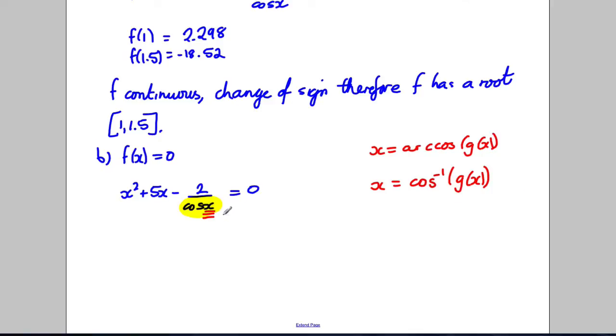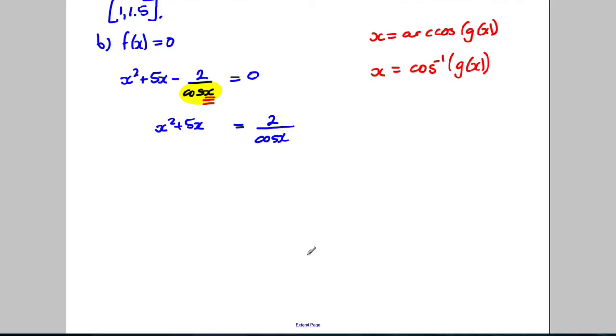So the first thing I'm going to do is I'm going to add 2 over cosine x to both sides. So I'm going to have x squared add 5x is equal to 2 divided by the cosine of x. Okay now what I could do is an operation that's fair. That's basically x squared add 5x divided by 1. And what I could do is I could flip both sides of these. I could take the reciprocal of both sides of these.